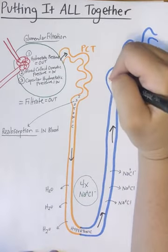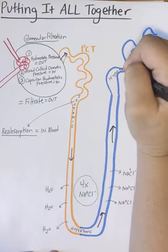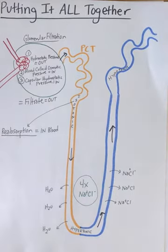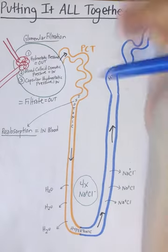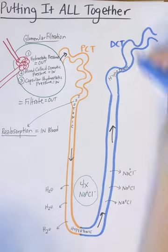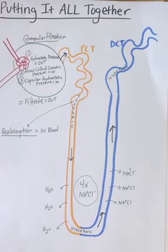The water is left inside, so in the distal convoluted tubule we have a hypotonic concentration.